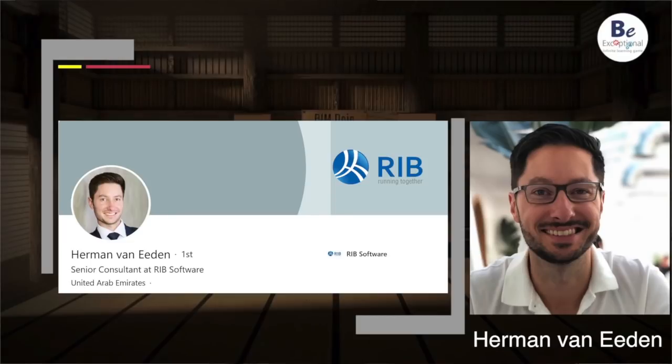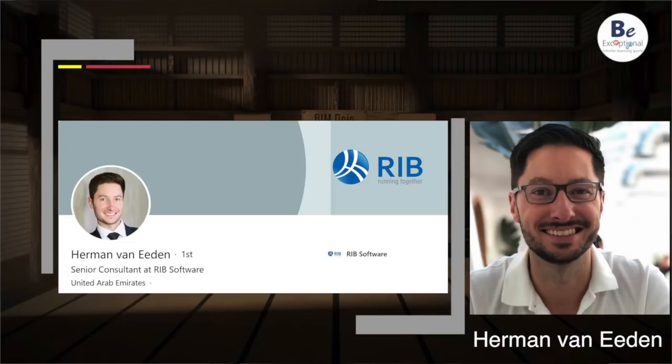Herman van Eerden is a cost consultant with RRB and a quantity surveyor by profession. He has a strong background in estimating technologies and understands the concept of limitations when discussing technology within our industry. Herman introduces himself as a guest on these 28 rules, noting that today's rule is all about the limitations of digital.